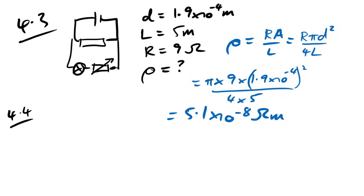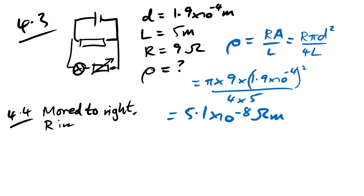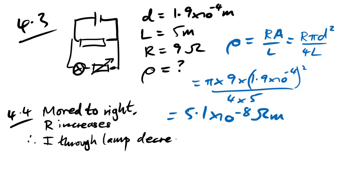Question 4.4: if the movable contact is moved to the right, R increases, therefore the current through the lamp decreases, and the lamp gets dimmer.